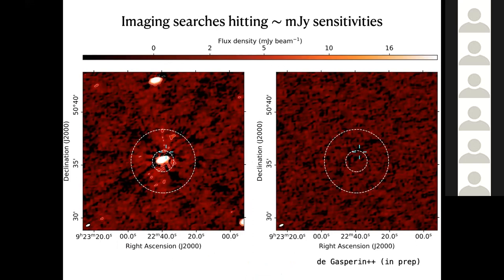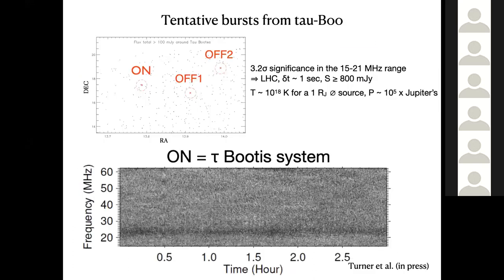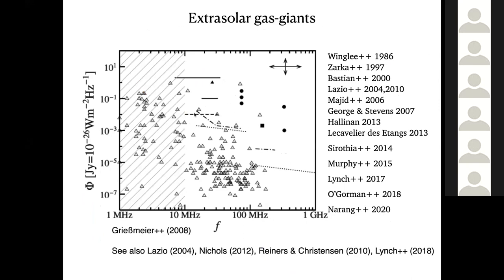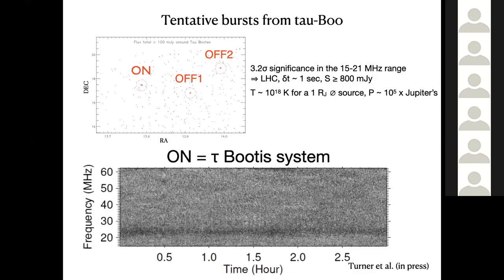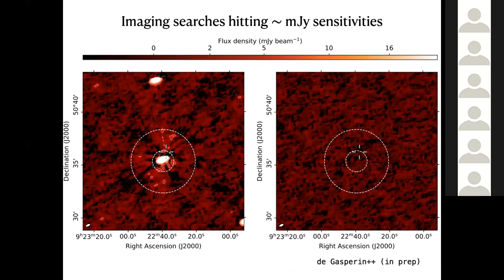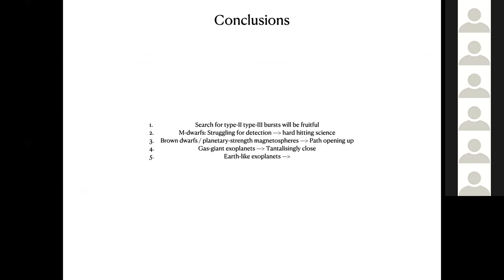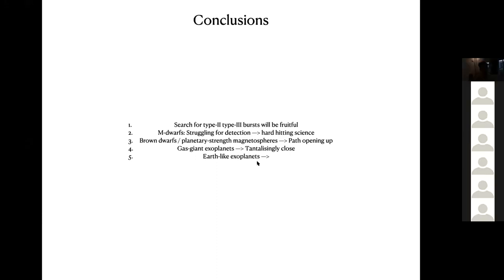Another recent result maps Stokes V emission around an exoplanet system, achieving milijansky sensitivity — and that's where the predictions say you need to be, at milijansky and sub-milijansky levels around 10–40 MHz. This data is around 40–50 MHz, so the coming year or two is going to be extremely interesting as we reach very interesting sensitivities. Thank you.